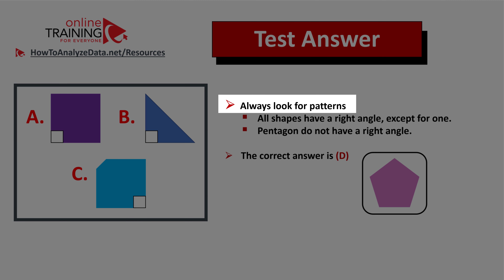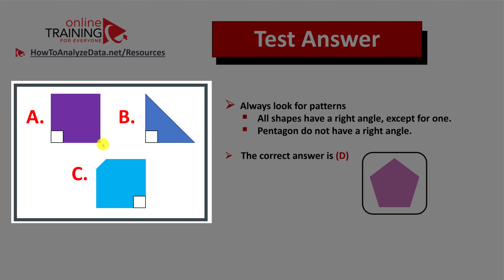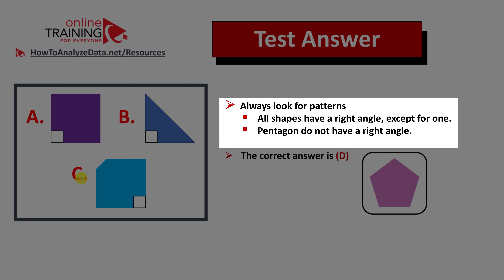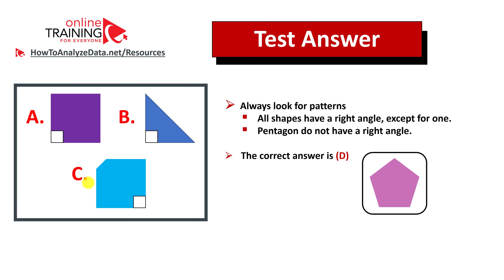Always look for patterns and commonalities between shapes. Choices a, b, and c all have a right angle — highlighted here. Choice c was designed to mislead you because it has a cut corner, but the correct answer is choice d. All shapes have a right angle except the pentagon, which does not. Select choice d.